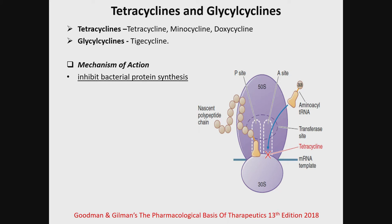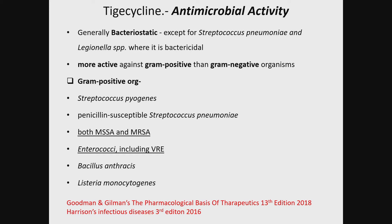Tigecycline is basically a bacterial protein synthesis inhibitor, which binds to the 30S bacterial ribosome subunit. Its antimicrobial activity is mainly bacteriostatic, but it is bactericidal in some cases, like in Streptococcus pneumoniae and Legionella. It is more active against gram-positive than gram-negative, but tigecycline has better gram-negative activity compared to the tetracyclines.